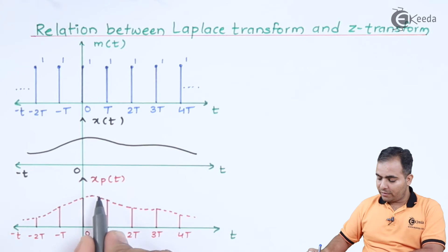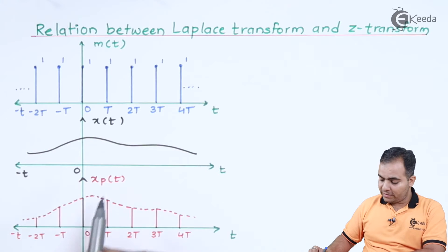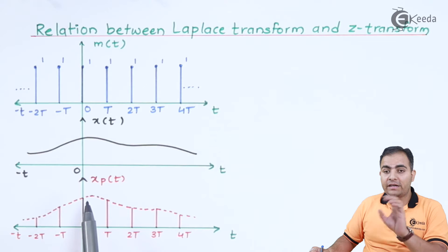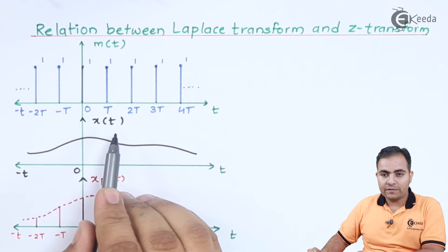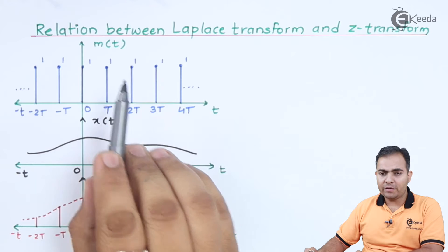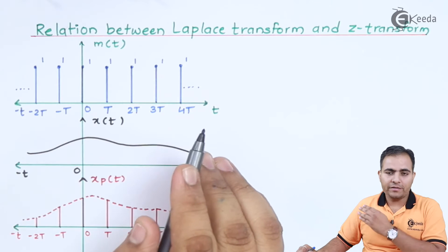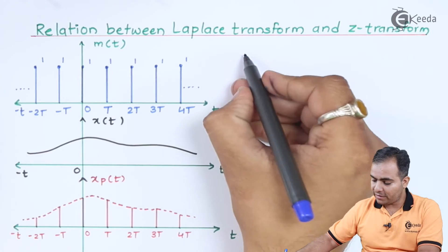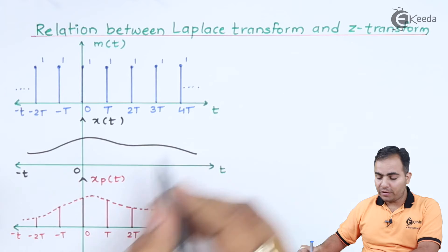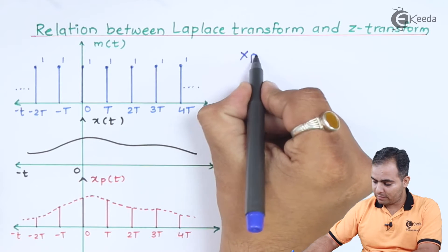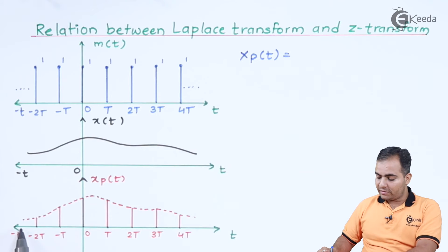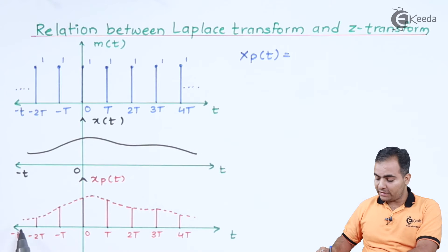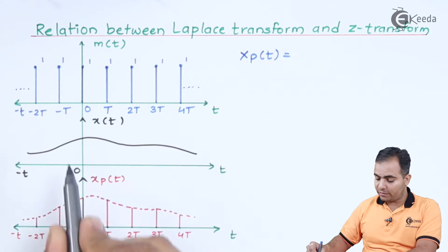First of all, what is xp(t)? Basically, xp(t) is a discrete version of a continuous time signal, where x(t) is a continuous time signal and m(t) is simply a train of impulses. So I can say that my xp(t) is simply a pulse string, or you can say it is a discrete sample version of a continuous time signal.